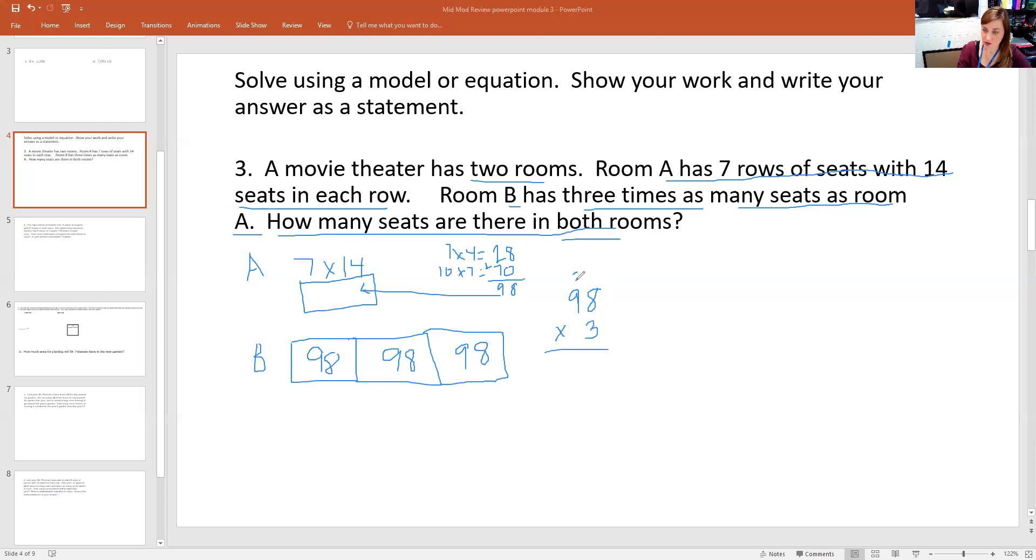So we have 24. And then nine times three is 27 plus two more, 29. Okay, so we know that is B. So then it says how many seats are there in both rooms? So what am I going to do to figure that out?